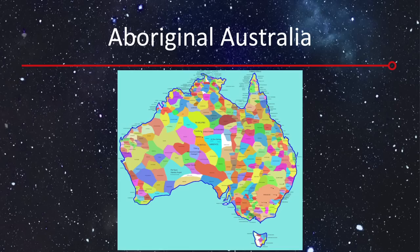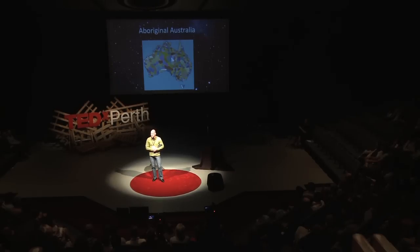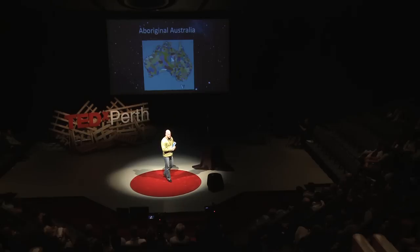The Aboriginal people living in this continent that we call Australia have been here for a very, very long time. So illustrated by the many dozens of different language and cultural groups that have developed around the country, you can see that over the tens of thousands of years this has become a very rich and diverse community.